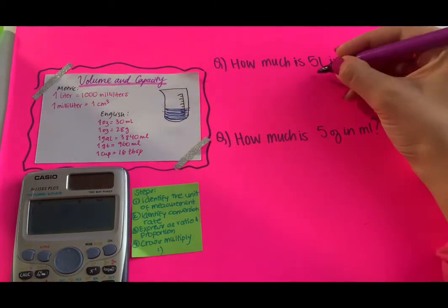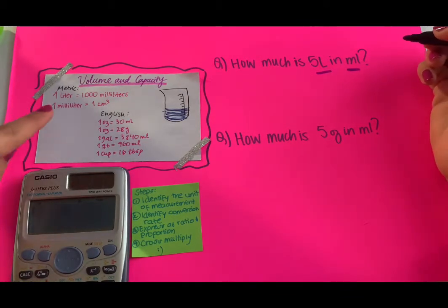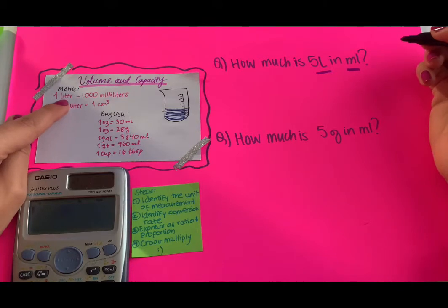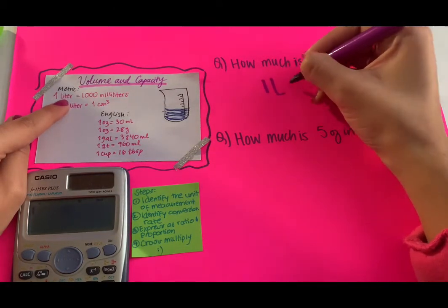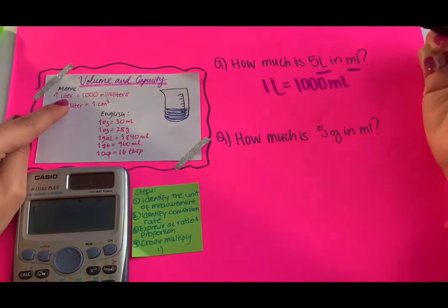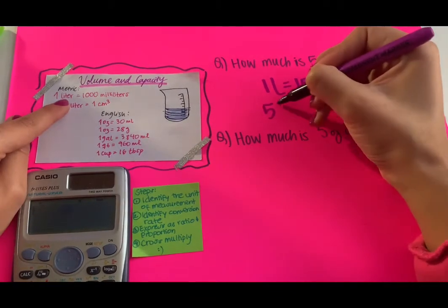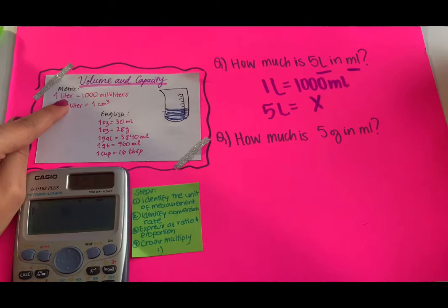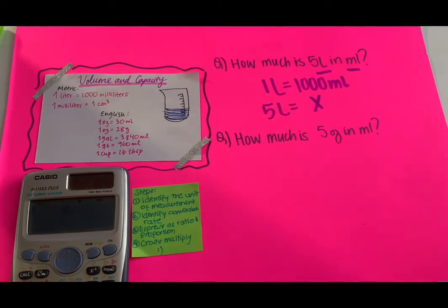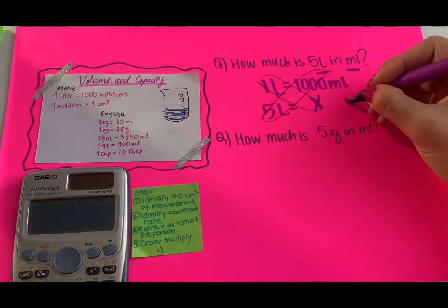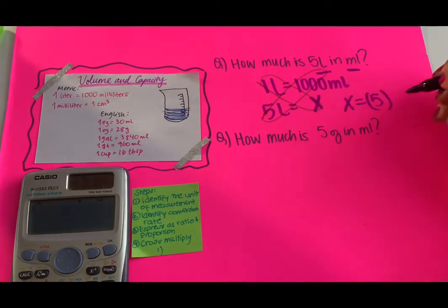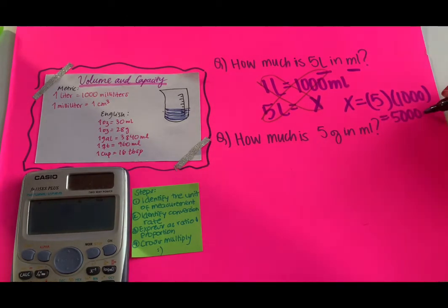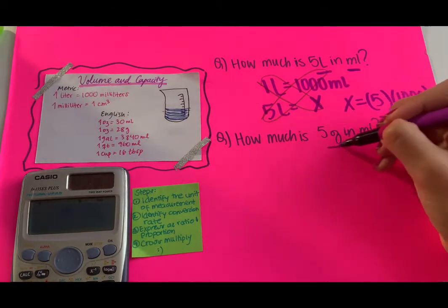Volume and capacity — how much is 5 liters in milliliters? We identify liters and milliliters, find the conversion rate: one liter equals 1000 milliliters. Write that down, place 5 liters on one side and x (milliliters) on the other. Cross multiply: one liter times x is x, and 5 multiplied by 1000 is 5000 milliliters.